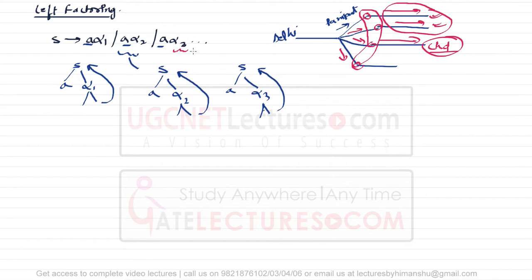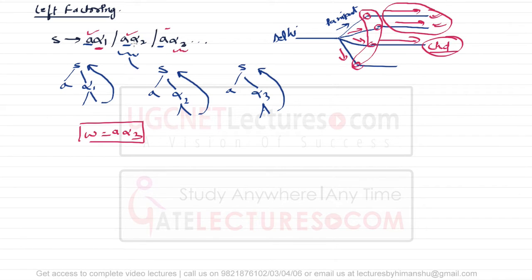All productions are competing because every production contains the first symbol 'a'. Even if you try to generate a string w = aα3, the parser matches 'a' in every production first, then checks the second symbol — wasting time on repeated first-symbol checks. This problem is called left factoring.